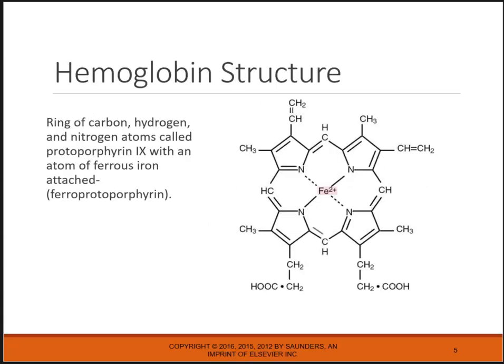Let's look at the structure of heme. You can see it is a ring of carbon, hydrogen, and nitrogen, and this is called the protoporphyrin 9 ring when we're looking at the whole thing. When it has iron in the ferrous state, then it is called ferroprotoporphyrin. So the protoporphyrin 9 ring, once iron gets inside, is called ferroprotoporphyrin.